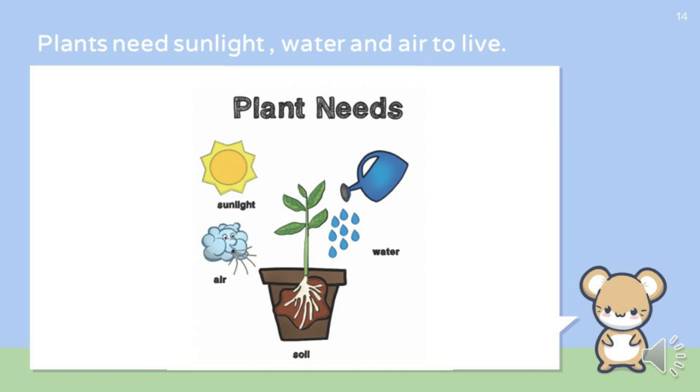However, plants do not eat food like humans and animals. They have the ability to make their own food by using sunlight, water, air and nutrients which they absorb from the soil.